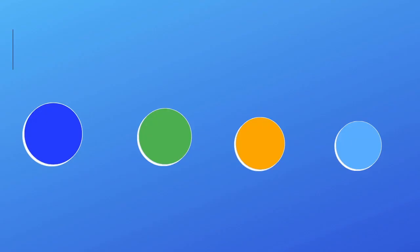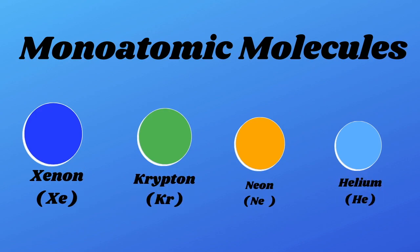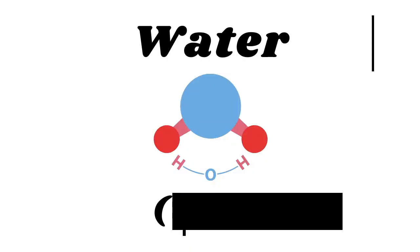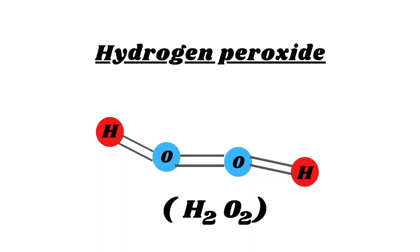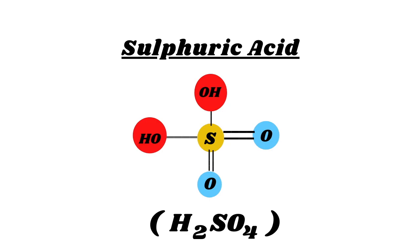Now we move on to compounds. Compounds are also pure substances made up of the combination of two or more elements or compounds. For example, water — the formula is H₂O: two atoms of hydrogen and one atom of oxygen. Another example is hydrogen peroxide, which is H₂O₂, indicating two atoms of hydrogen plus two atoms of oxygen. A third example is sulfuric acid, with the formula H₂SO₄. The properties and composition of compounds are different from their constituent elements — water, for instance, is made up of two gases: hydrogen and oxygen.